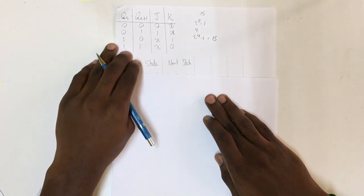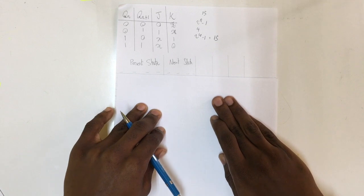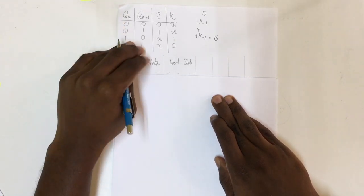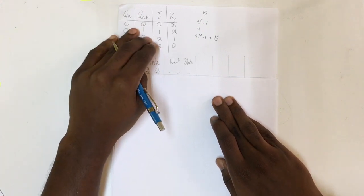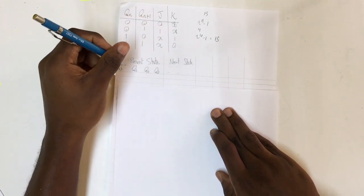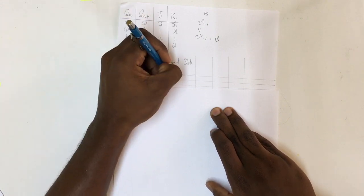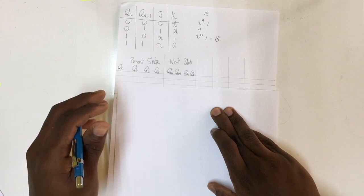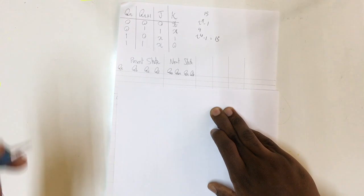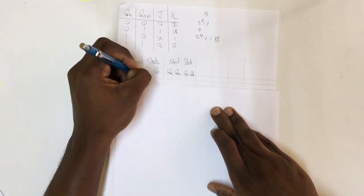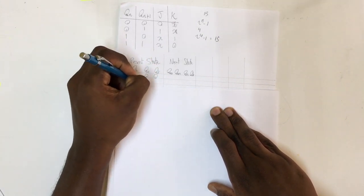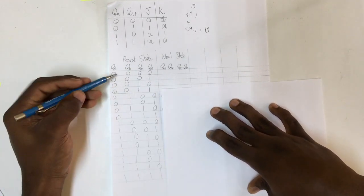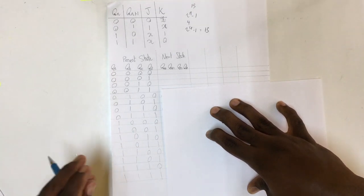Now to build the transition table, we have a present state and a next state. Since we are going to be using 4 bits, we can represent each bit using A, B, C, and D — QA, QB, QC, and QD for the present state. We can represent the next state as QA+1, QB+1, QC+1, and QD+1. Since we are counting from 0 to 15, we fill out the present state from 0 to 15. I have filled out the rest of the table — you can pause the video and take a look.